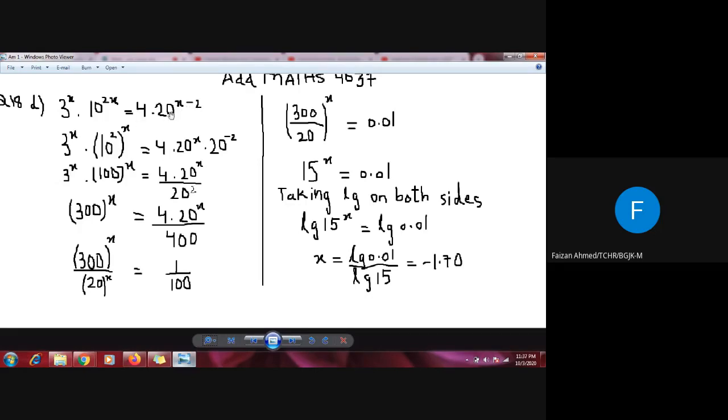10 square is 100, so this is 3x times 100 to the power x. The negative power can be made positive by shifting to the denominator, so it becomes 4 multiplied by 20^x upon 20 square.